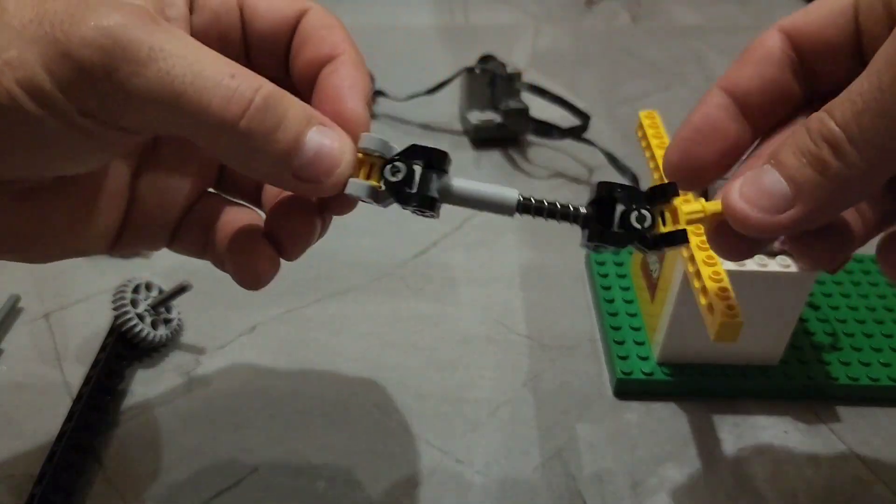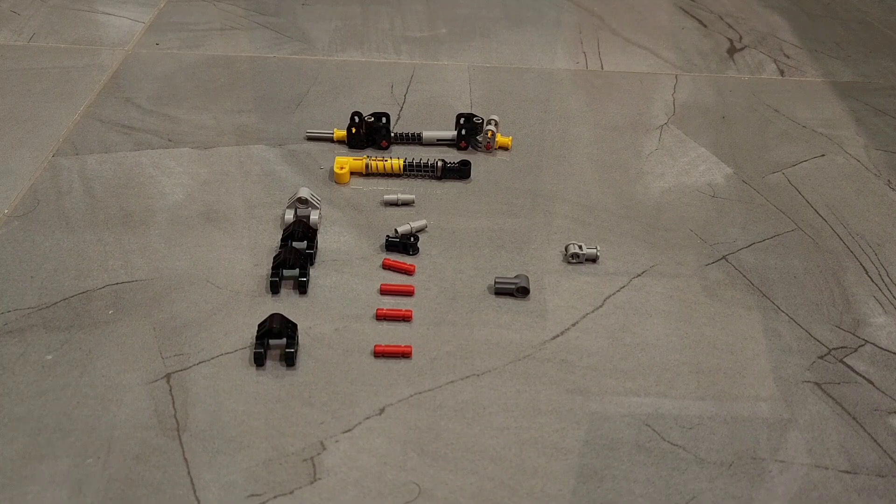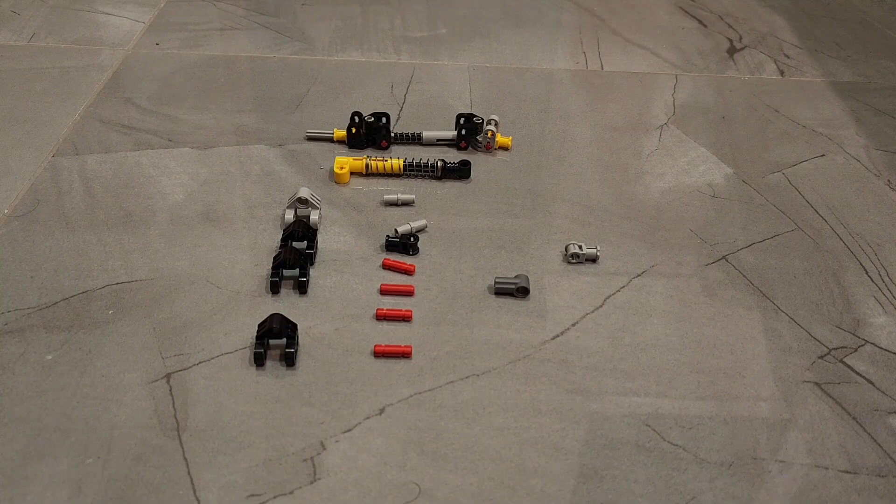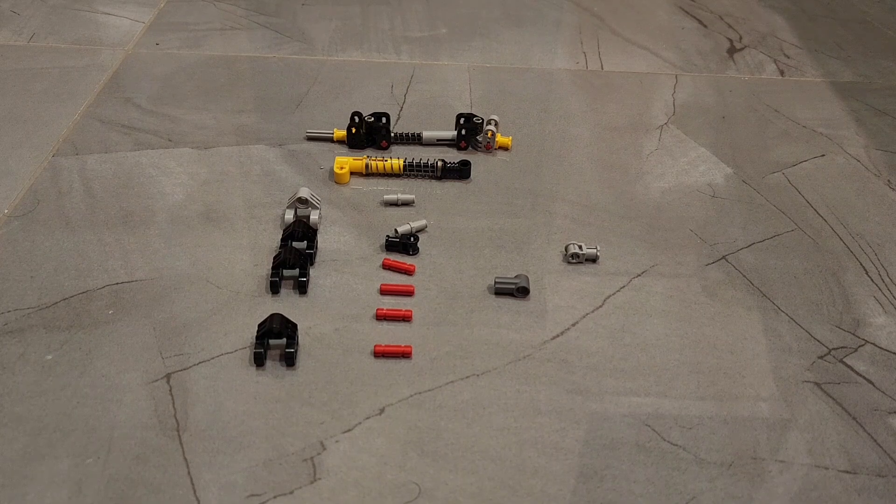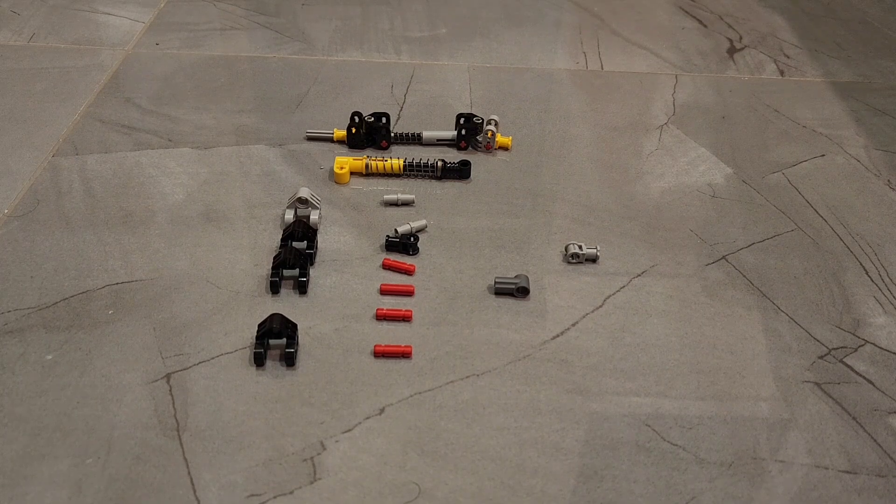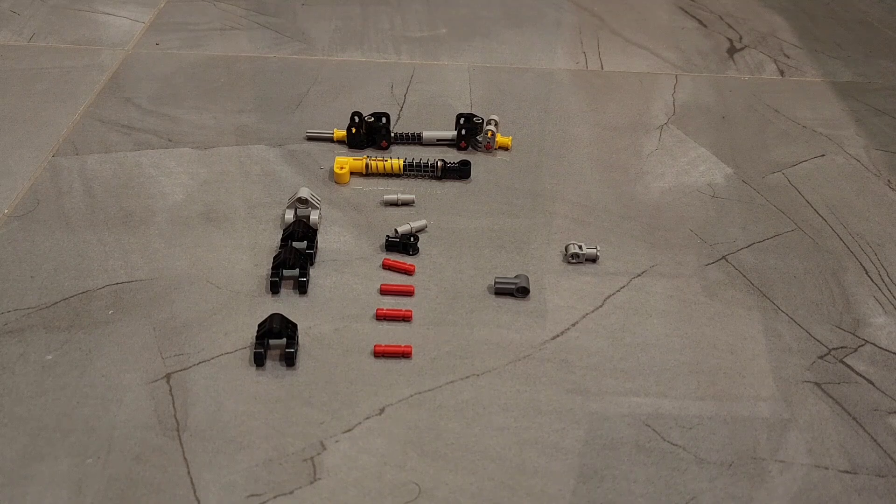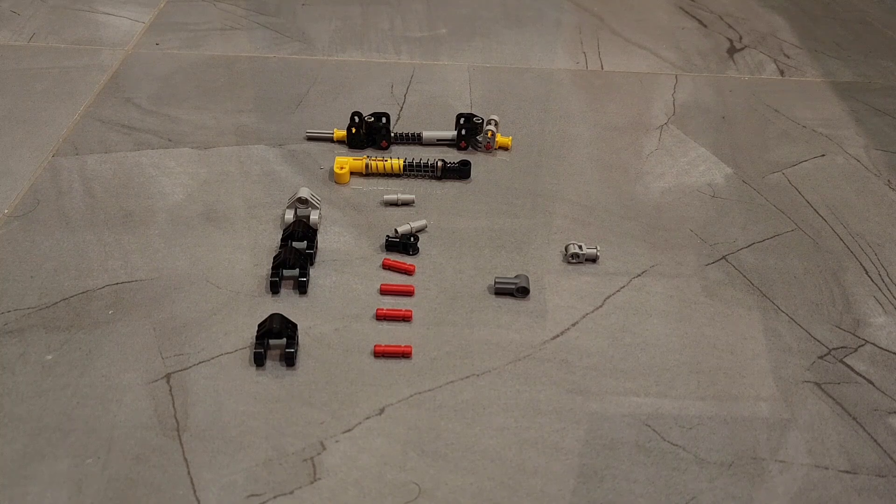Very robust. Here we can see all the parts that we need to build the CV joint, and then I will show you how I built it. You can see nothing special, nothing rare—very simple parts and very easy to build.